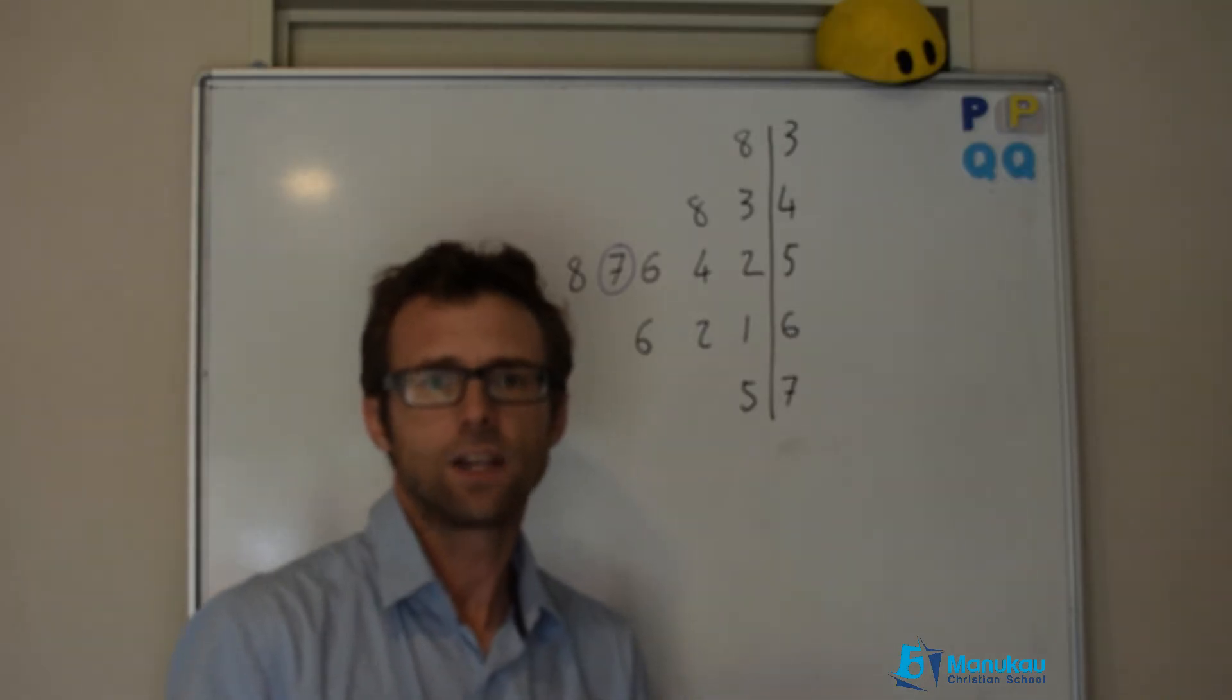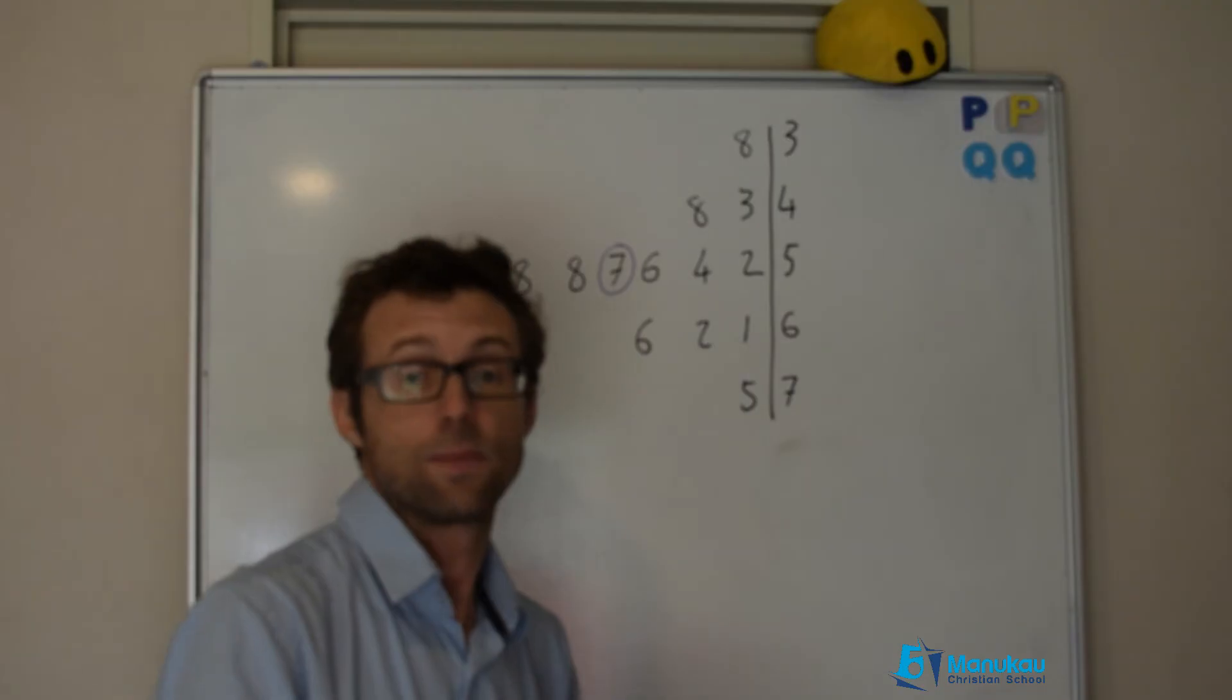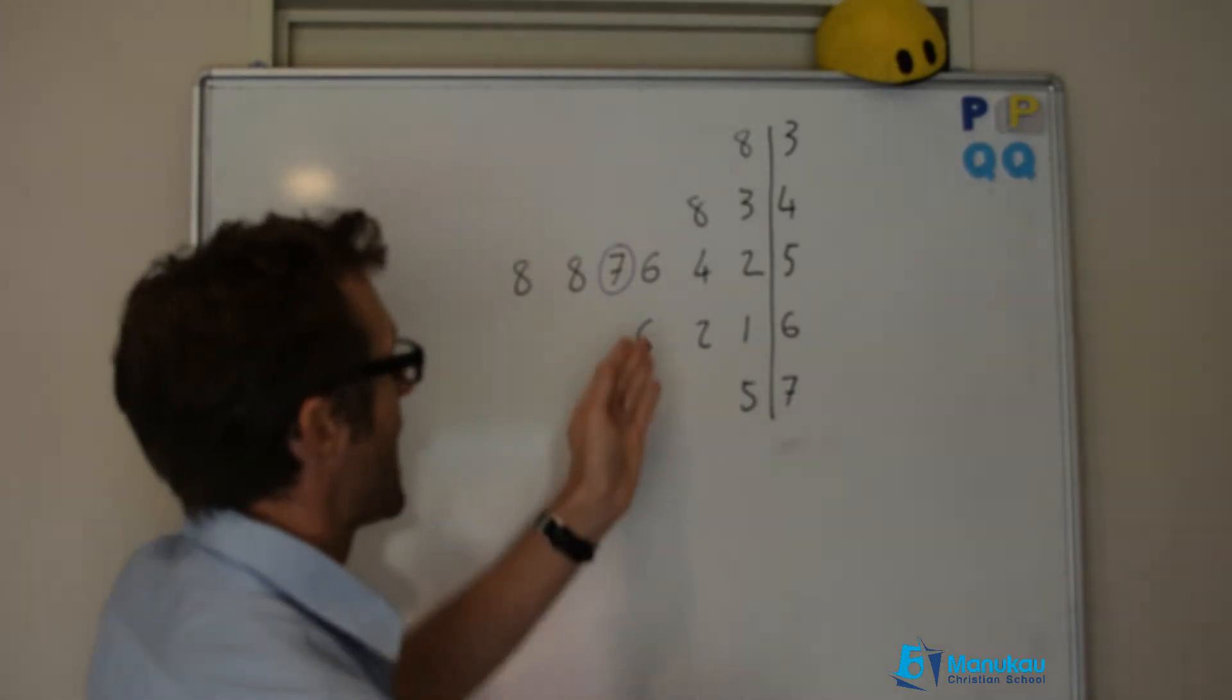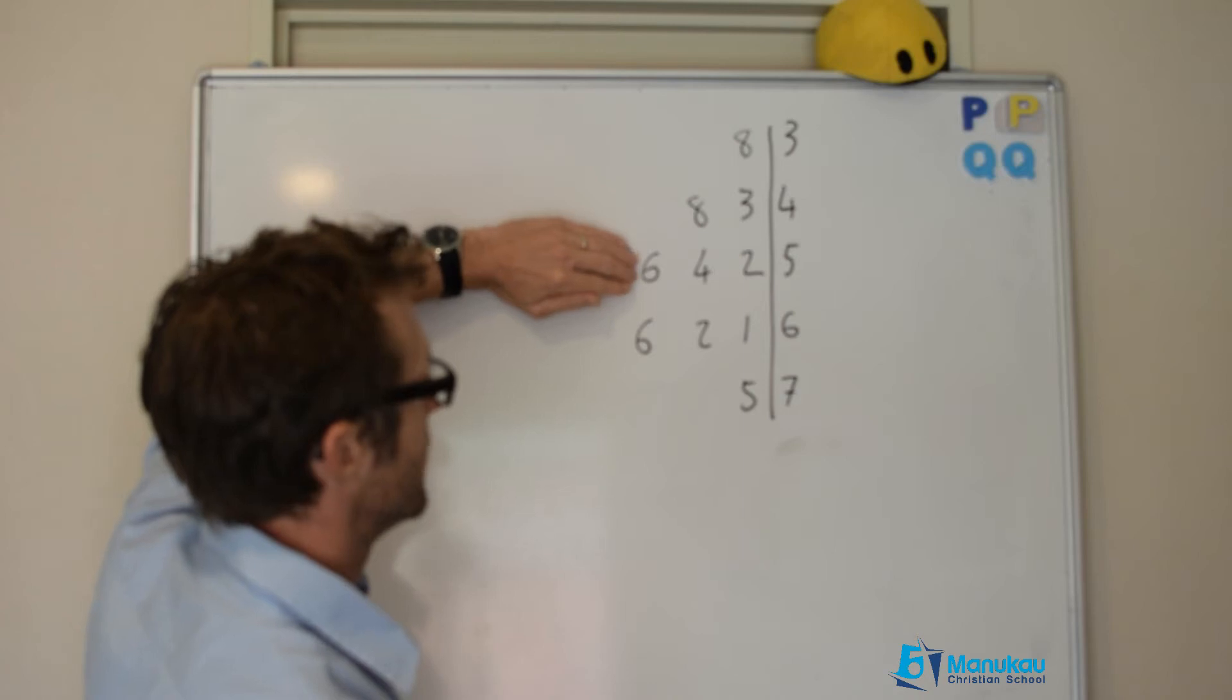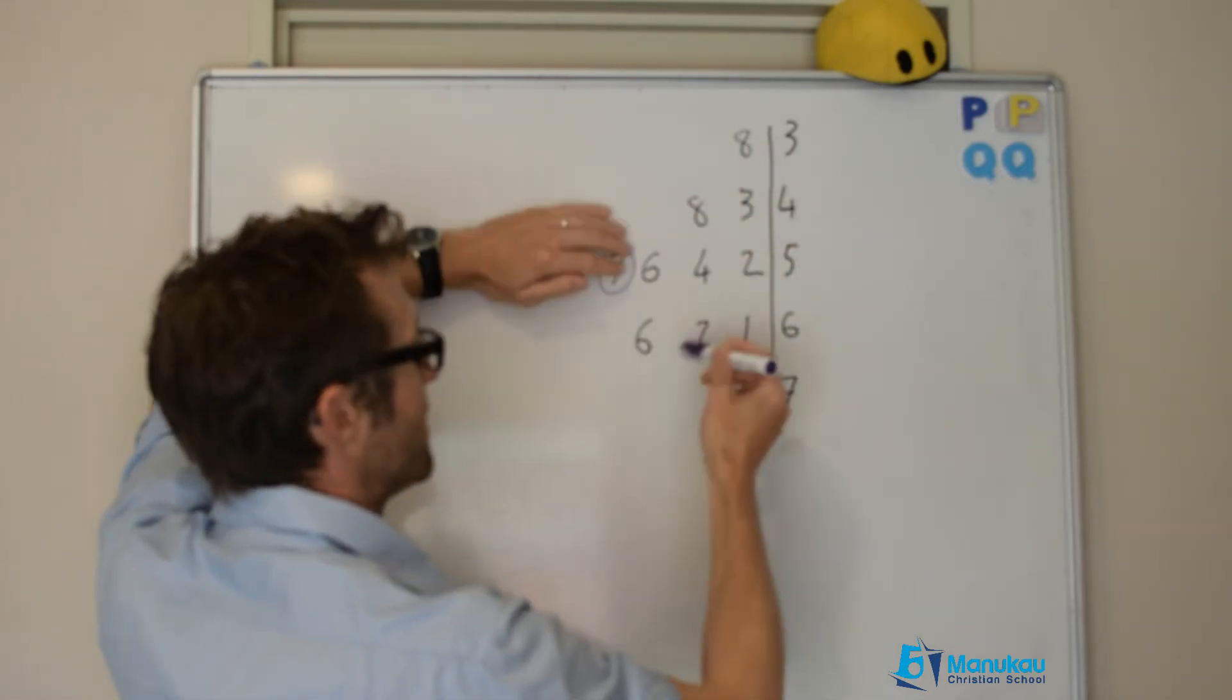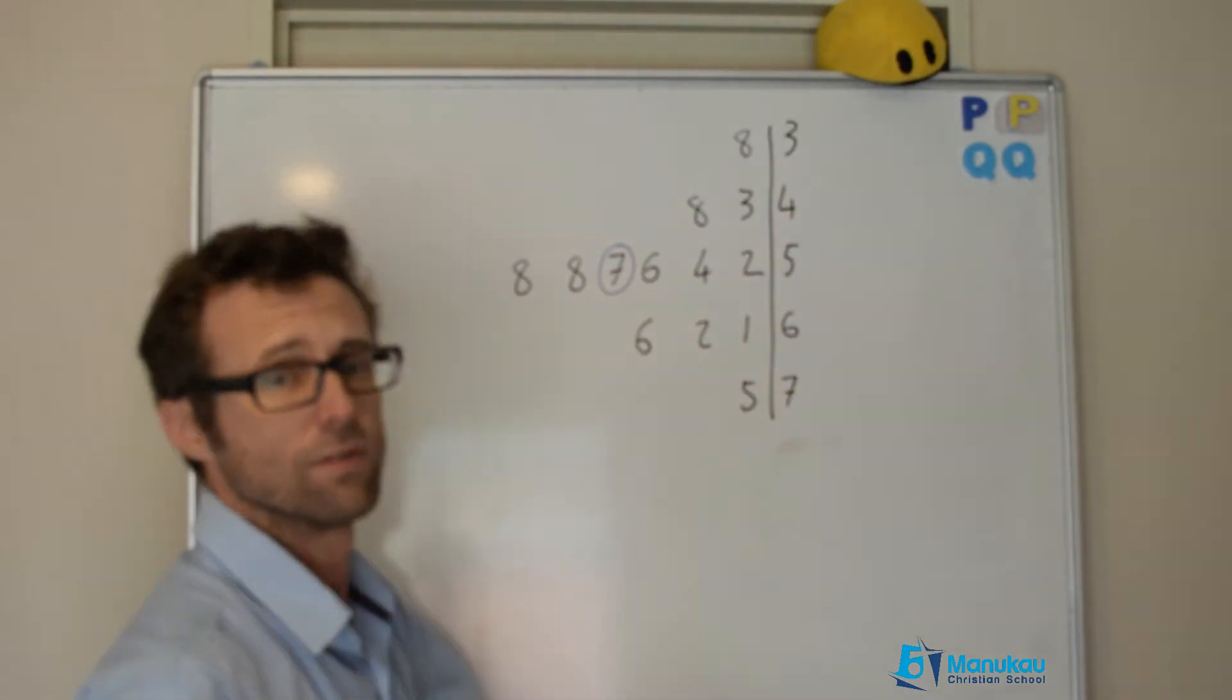To find the lower quartile in data like a stem and leaf plot, you want to find the median of the lower half. Now we can ignore this and we're finding the median of this lower half of data. You'll note that we have 1, 2, 3, 4, 5, 6 items of data.